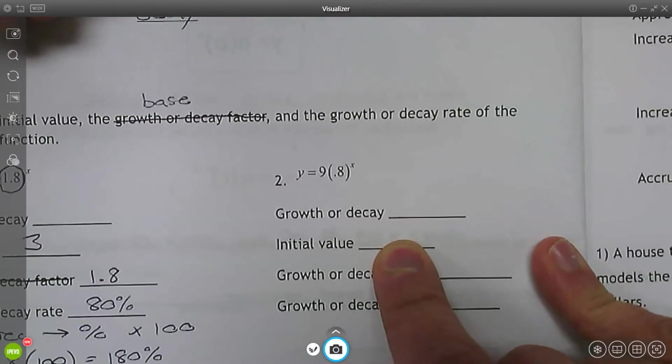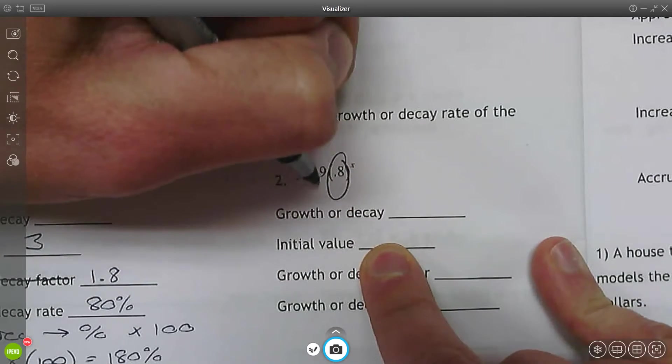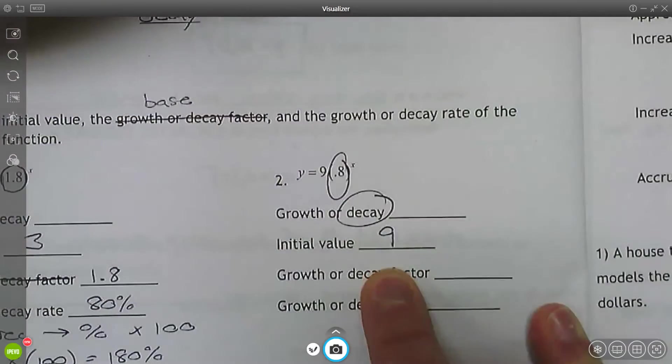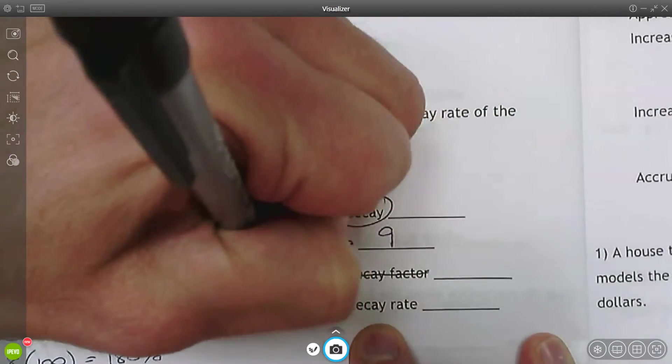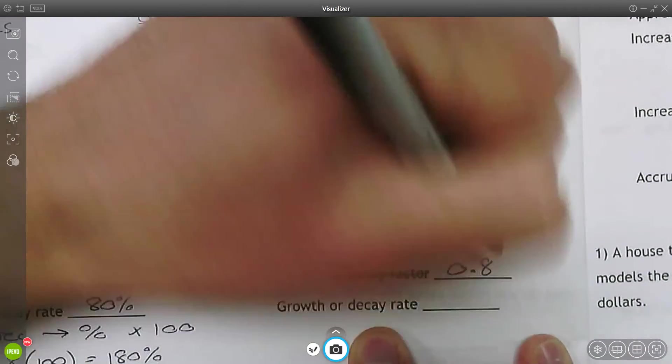That's where we're starting, 100%. If I'm now at 180%, I've grown by 80%. This is 80% growth. In the second example, growth or decay, I'm going to look at the base, 0.8. That's decay. The initial value is 9. The base is that 0.8.